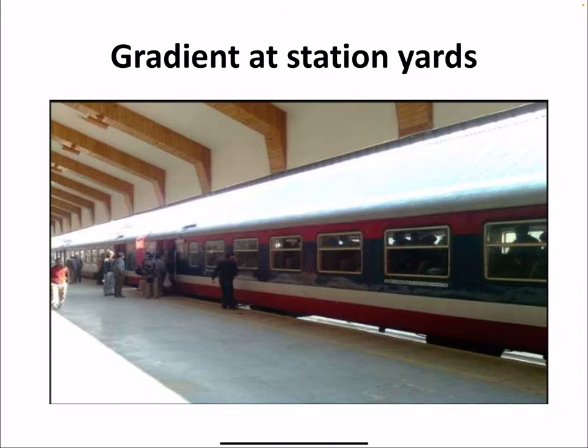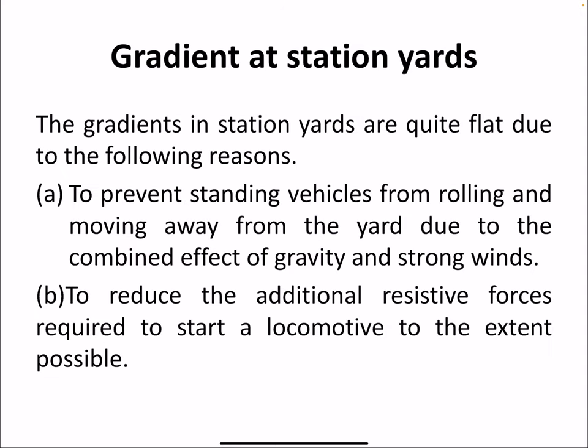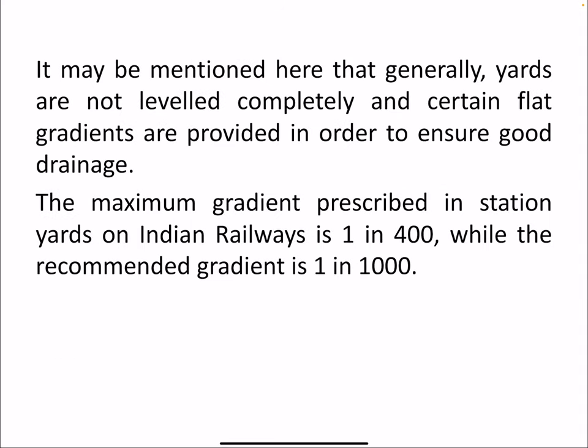The last type is gradients provided at stations and yards. Gradients in stations and yards are kept quite flat for two reasons: to prevent standing vehicles from rolling and moving away from the yard due to gravity and strong winds, and to reduce the additional resistive forces required to start a locomotive. Yards are not leveled completely; certain flat gradients are provided to ensure proper drainage. The maximum gradient prescribed in station yards on Indian Railways is 1 in 400, while the recommended gradient is 1 in 1000.